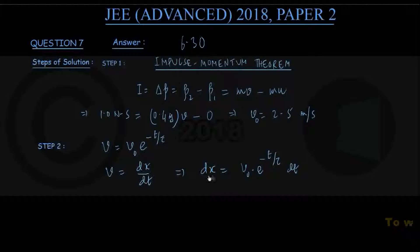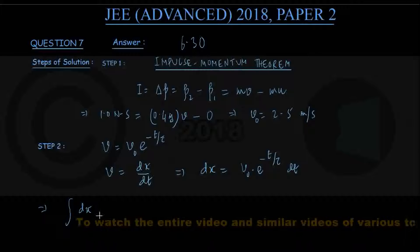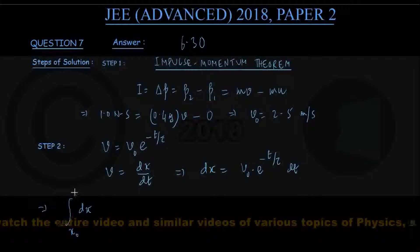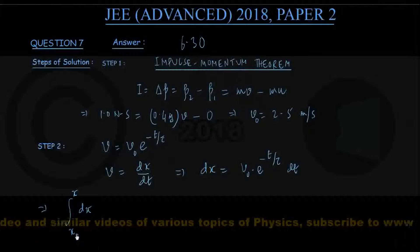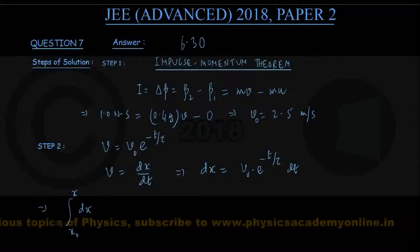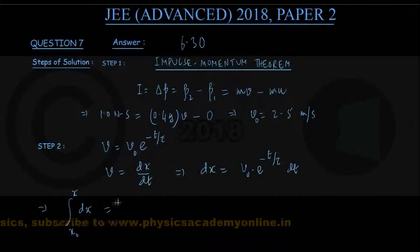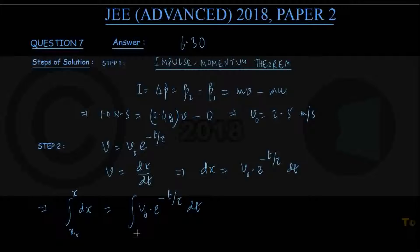There are two variables here, differential equations. So let us integrate in the next step. Both sides: left hand side integration of dx between the limits x0 and x. x0 is the position of the block at time t equals 0, x is at any time say tau. On the right hand side, integrating v0 times e to the power minus t by tau dt. If you read the question, they are looking for the displacement in time equal to tau. So initial time is 0, final time is tau.